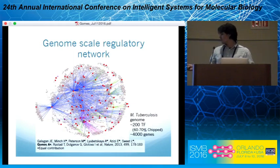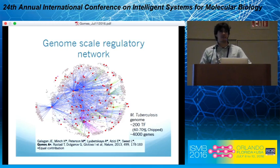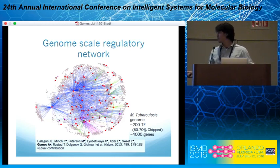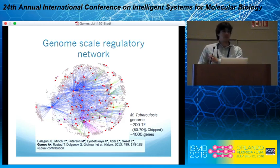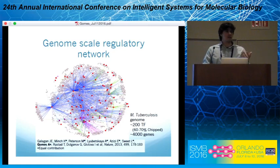For the case of Mycobacterium tuberculosis, their genome has about 200 transcription factors that regulate around 4,000 genes. This hairball represents the regulatory network — each red dot represents a transcription factor, and the edges represent regulation.